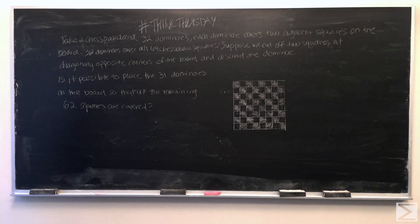Each domino covers two adjacent squares on the board and 32 dominoes cover all 64 chess board squares. Suppose we cut off two squares diagonally at opposite corners of the board and discard one domino. Is it possible to place the 31 dominoes on the board so that the remaining 62 squares are covered?